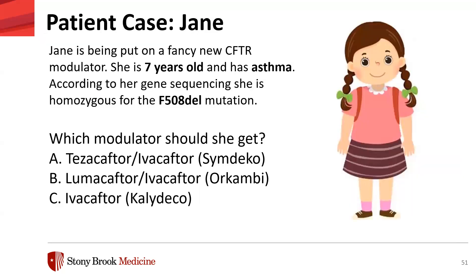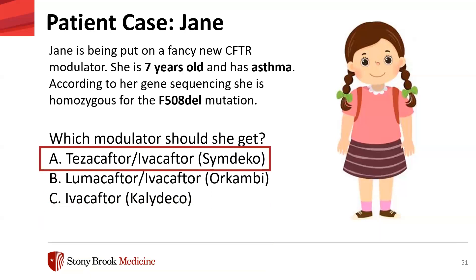Back to patient case: Jane is being put on a CFTR modulator. She is seven years old, has asthma, and is homozygous for the F508del mutation. Which modulator should she get? The answer is Symdeco. Although Orkambi can be used in homozygous F508del, Jane has asthma and Orkambi can cause chest tightness. Ivacaftor alone does not cover F508del — it covers class 3 and 4 mutations.